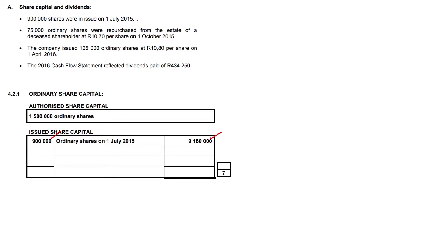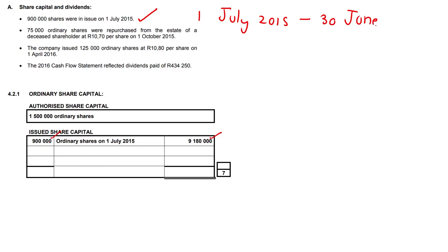900,000 shares were in issue on the 1st of July 2015. So our period is going to be from the 1st of July 2015. We subtract one day and add one year to get our financial year end — that's 30th June 2016.